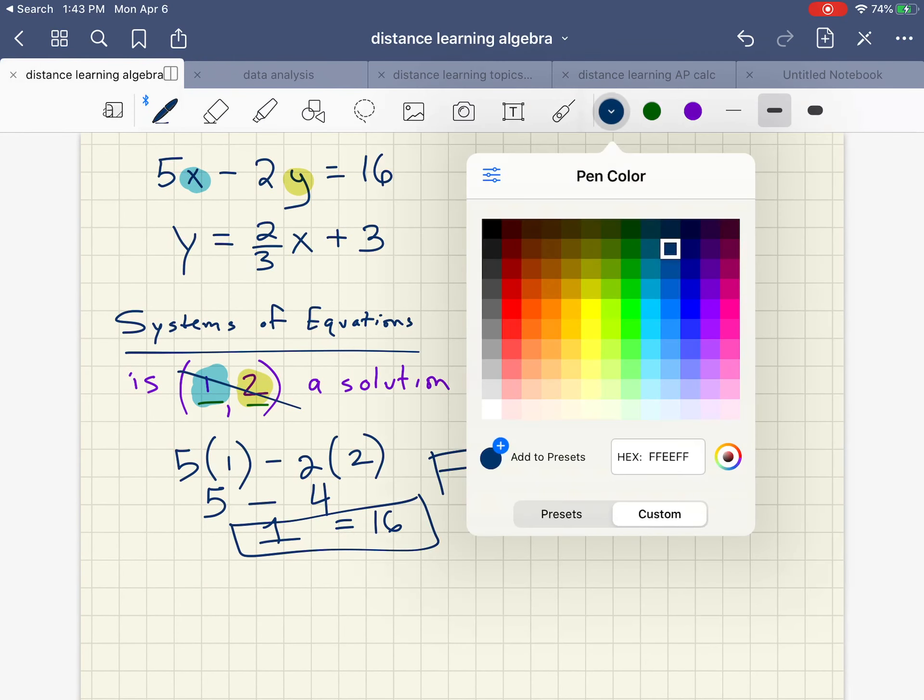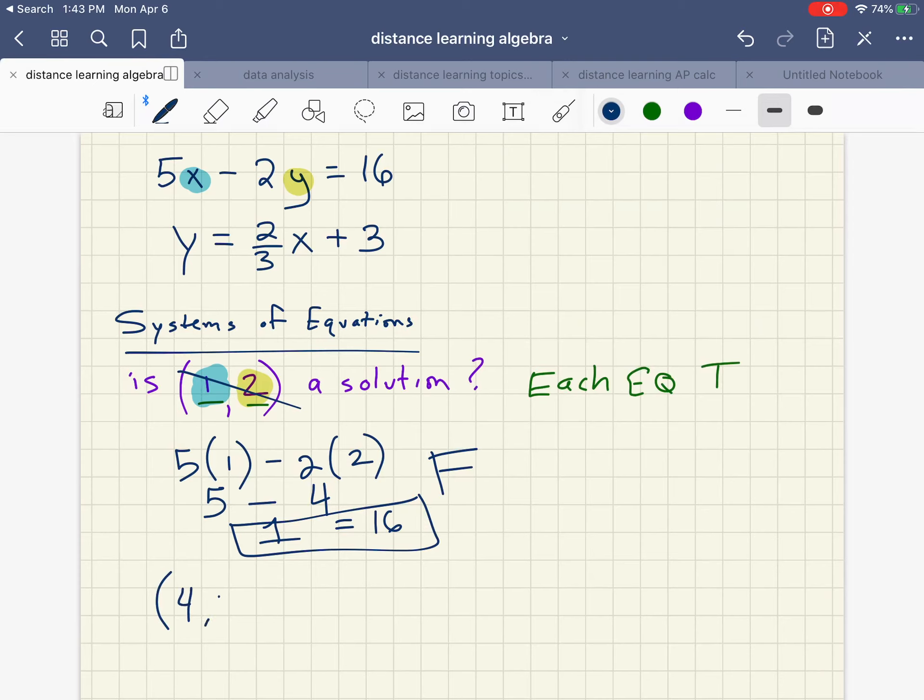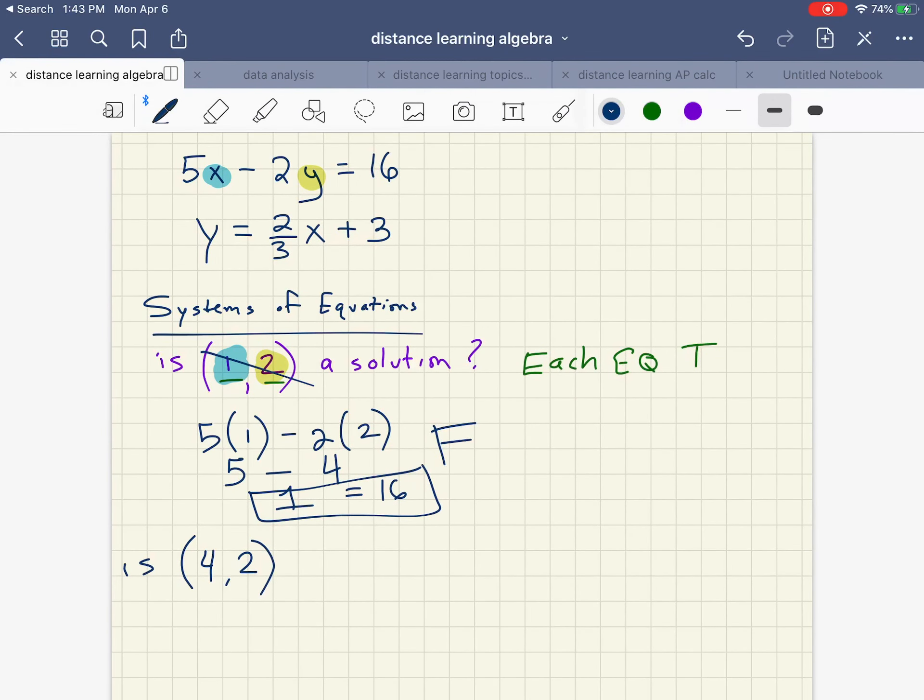So that does not work. Let's try a different point. Let's try (4,2). Maybe (4,2) is a solution. So we're going to plug that in again. The 2 goes in for the y, the 4 goes in for the x. We have 5 times 4 minus 2 times 2, and we're going to check to see if that equals 16. Again I'm using just this equation to start.